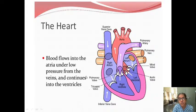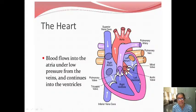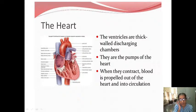Blood is coming into the right atrium via the superior vena cava and the inferior vena cava. The valves between the atrium and ventricle, and between the left atrium and left ventricle, open and allow blood to pass from the right atrium into the right ventricle, and from the left atrium into the left ventricle.